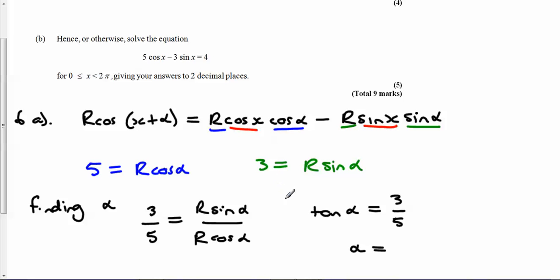It asks for alpha to two decimal places, so we just need 0.54.